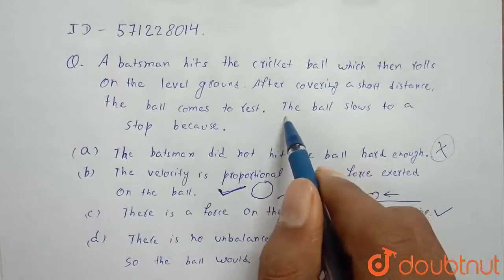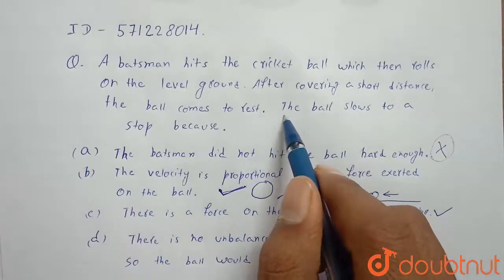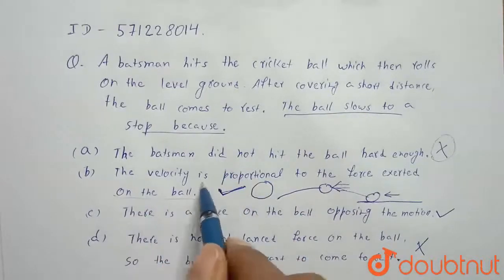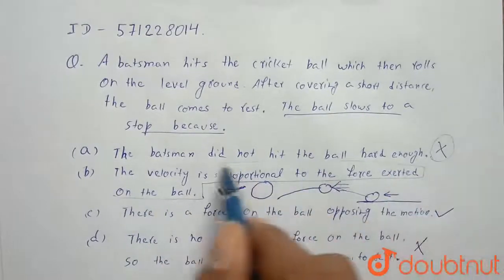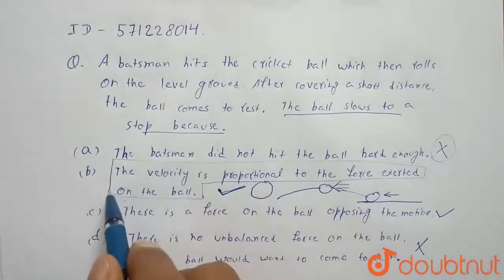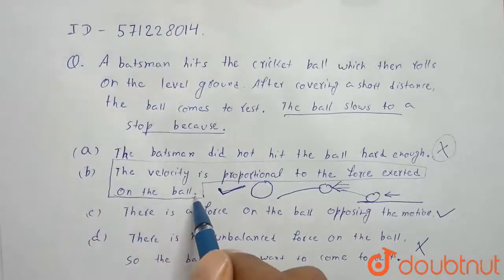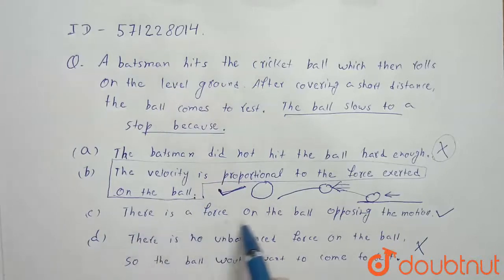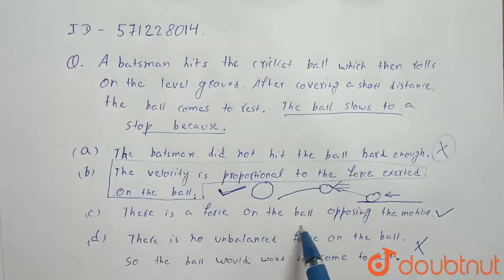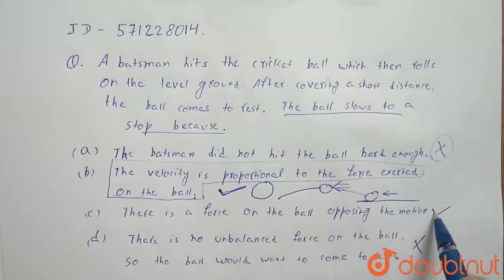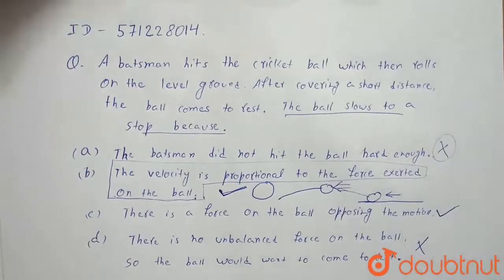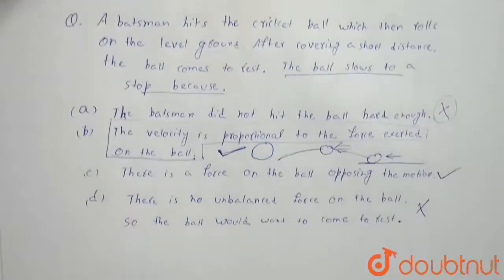The second explanation is correct, but it is not our answer. We need the reason why the ball is stopping. This option only explains that if we hit harder, the velocity will be greater — it doesn't explain why the ball stops. The third option is: there is a force on the ball opposing the motion. Yes, this explanation is correct.